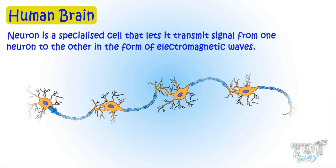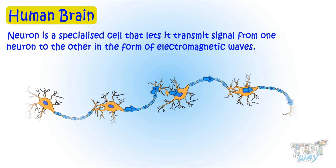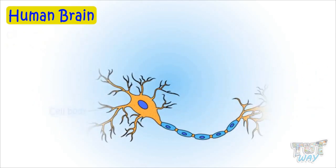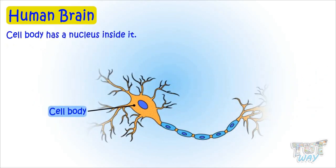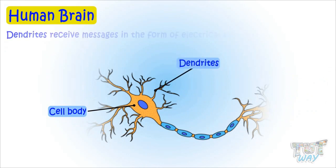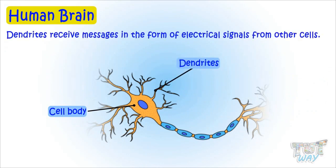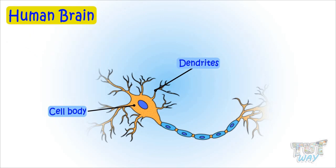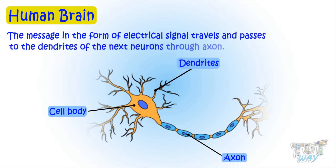A neuron is a specialized cell that transmits signals from one neuron to the other in the form of electromagnetic waves. This is a cell body that has a nucleus inside it. These are dendrites that receive messages in the form of electrical signals.